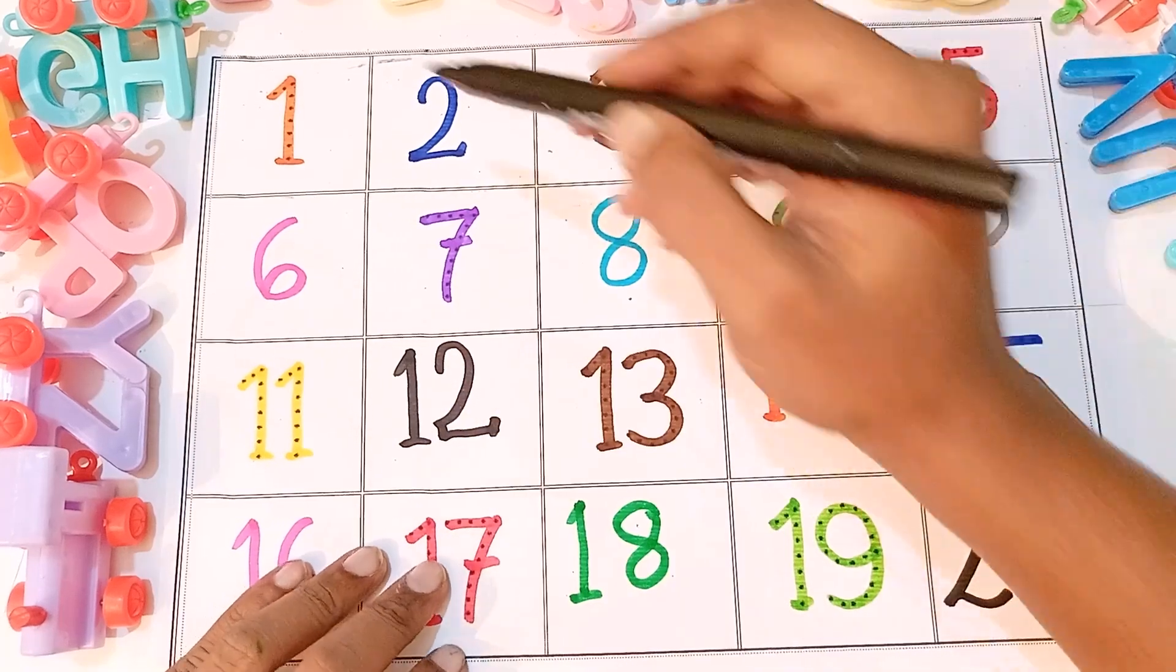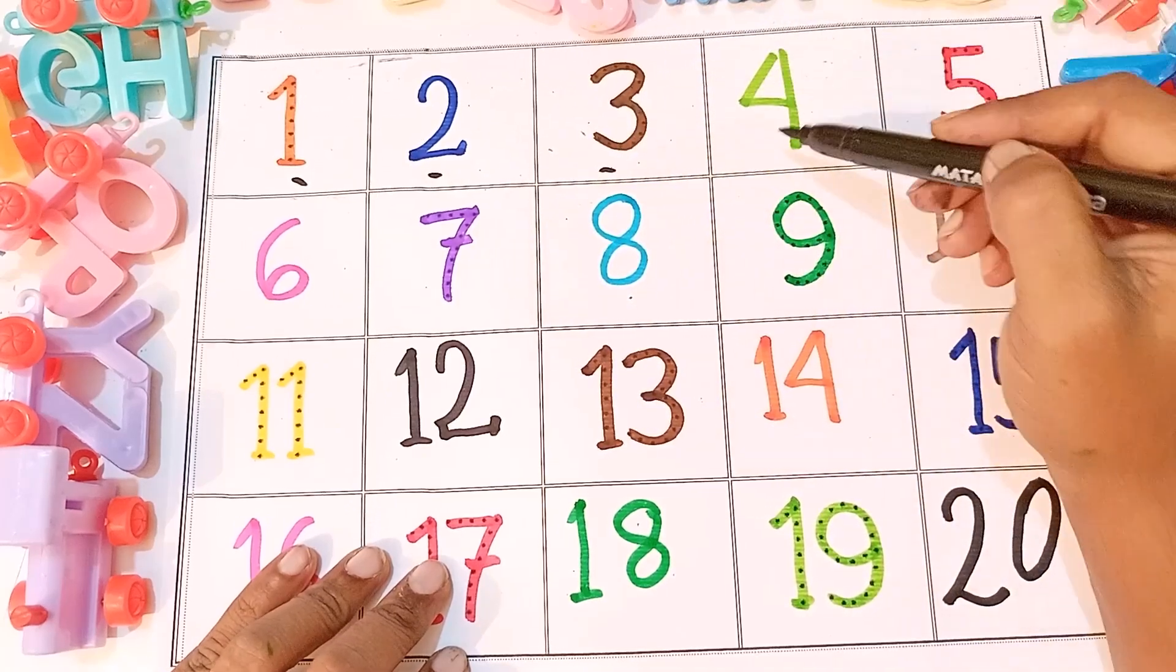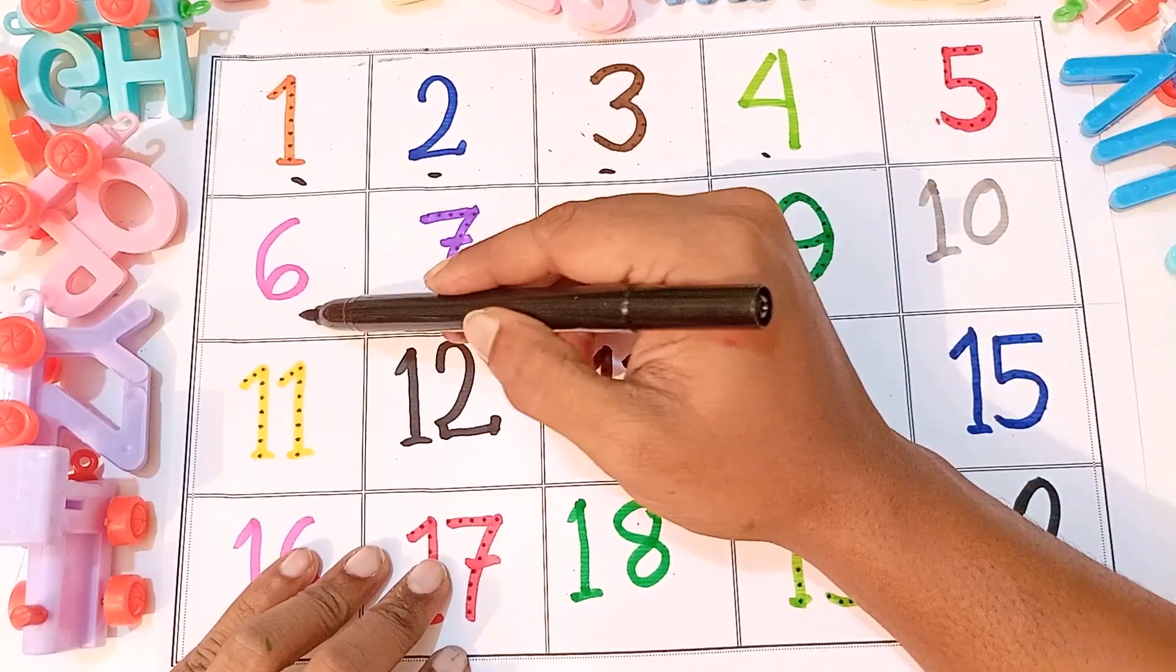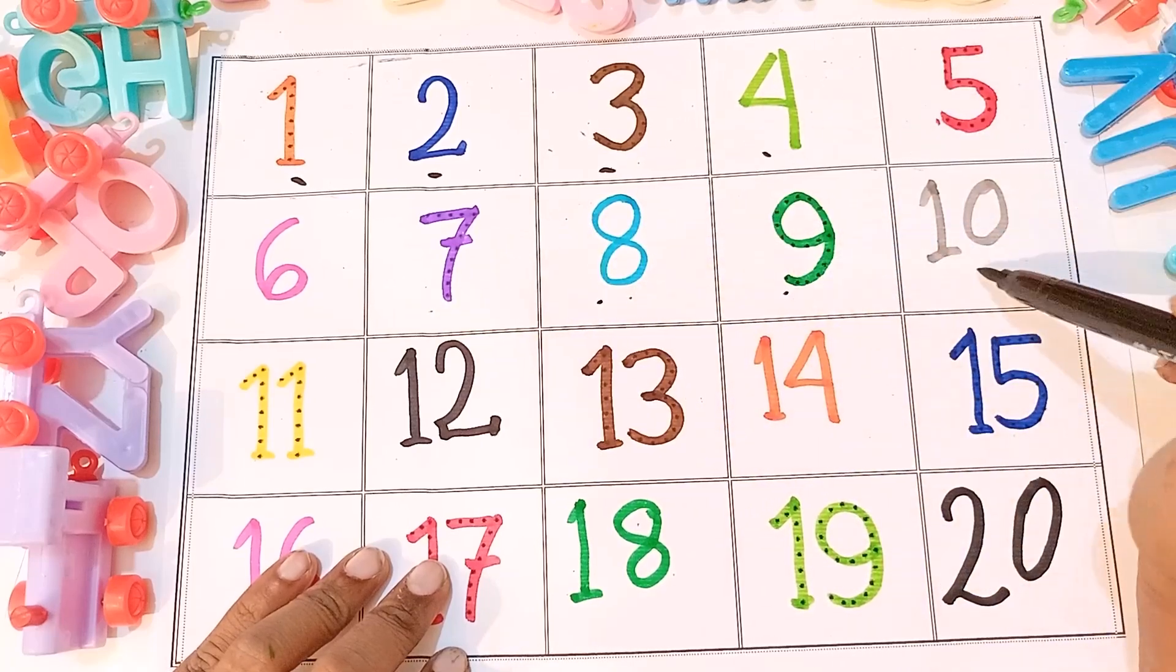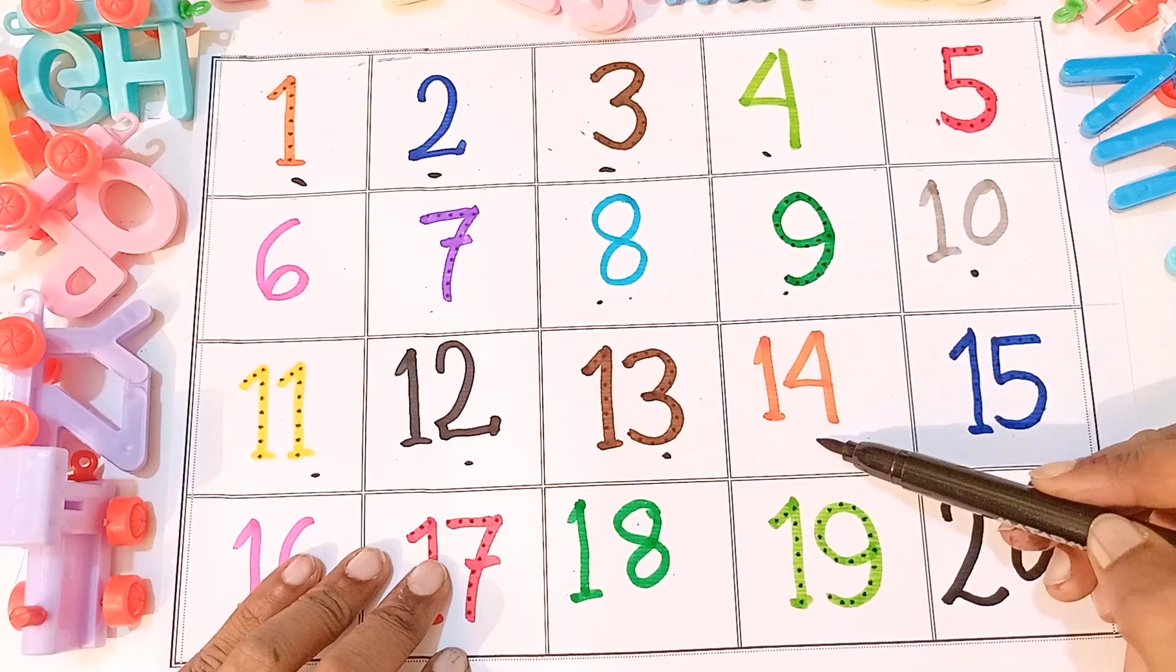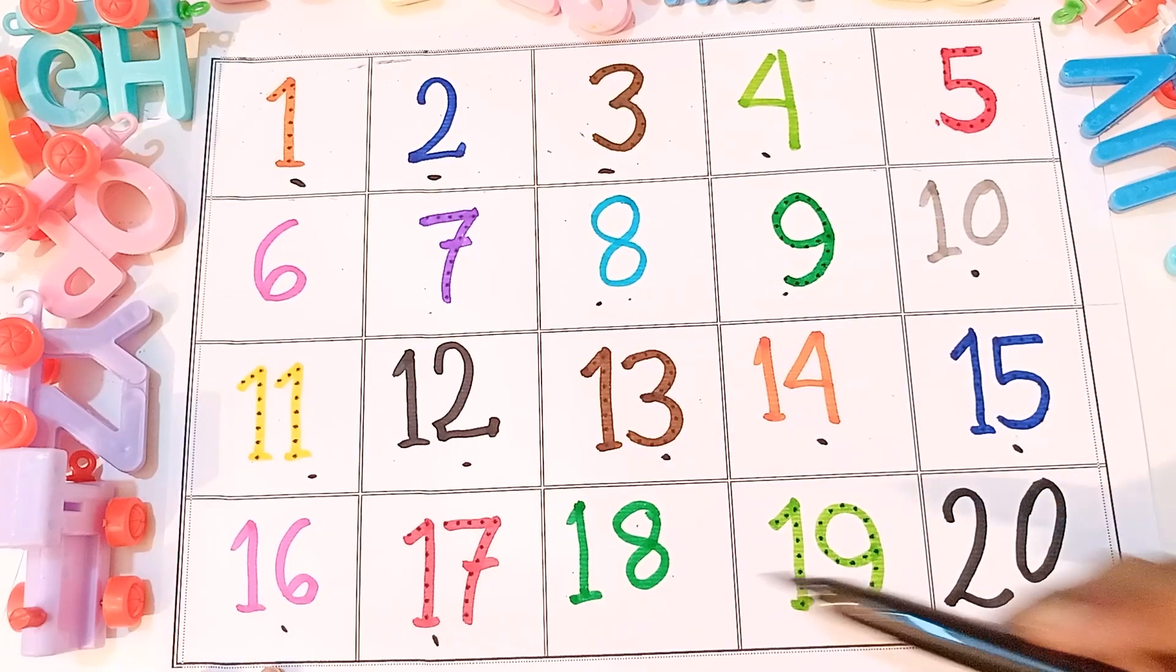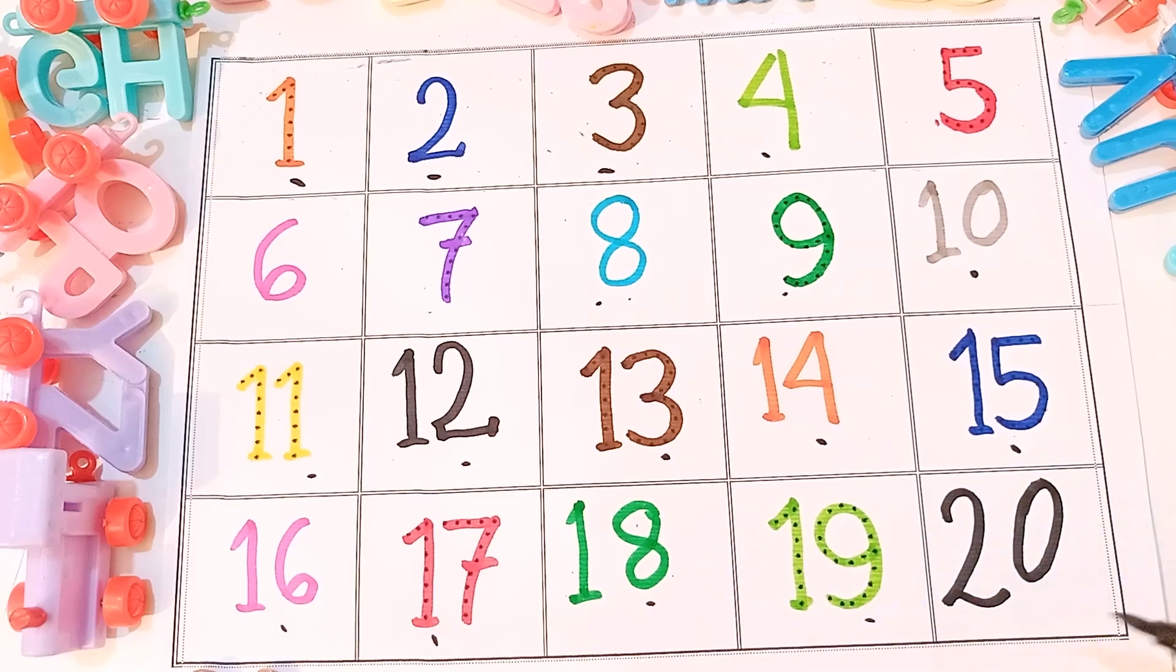Okay, now I am going to read it again. One, two, three, four, five, six, seven, eight, nine, ten, eleven, twelve, thirteen, fourteen, fifteen, sixteen, seventeen, eighteen, nineteen, twenty.